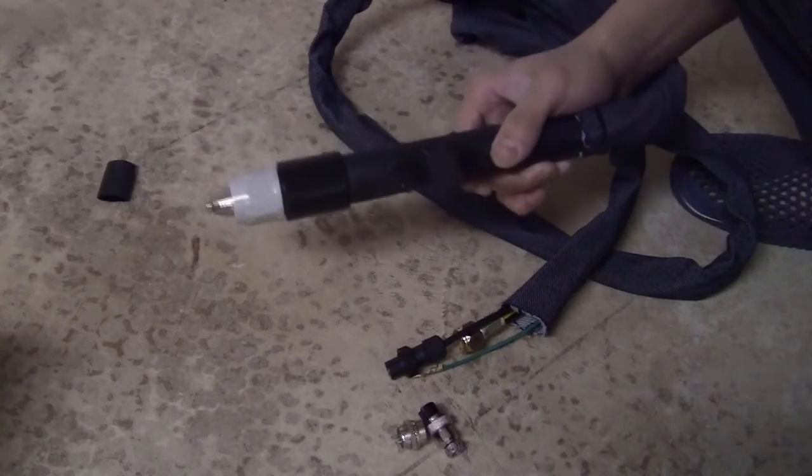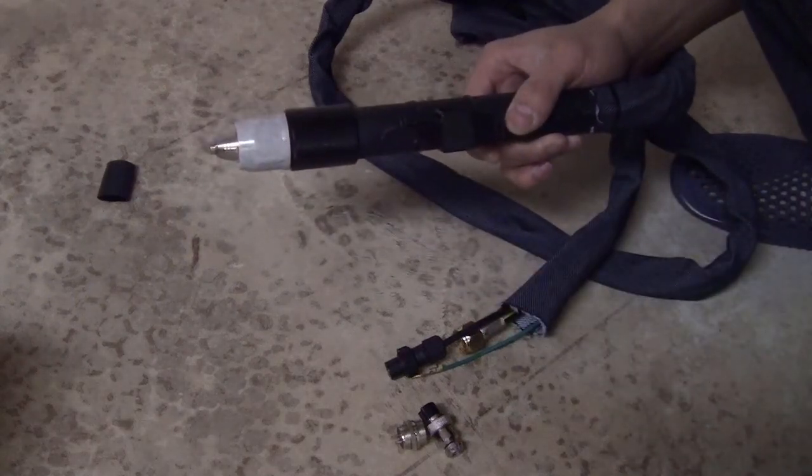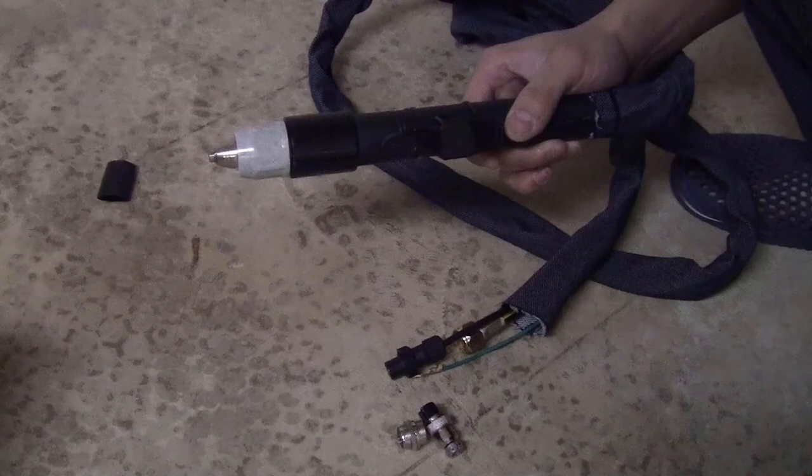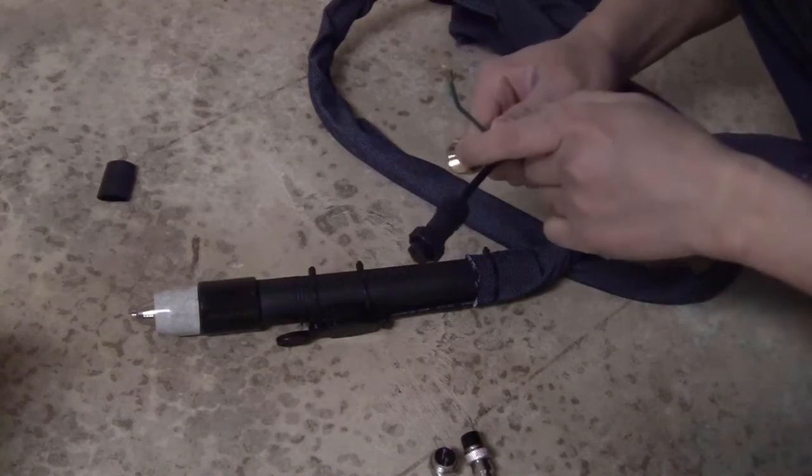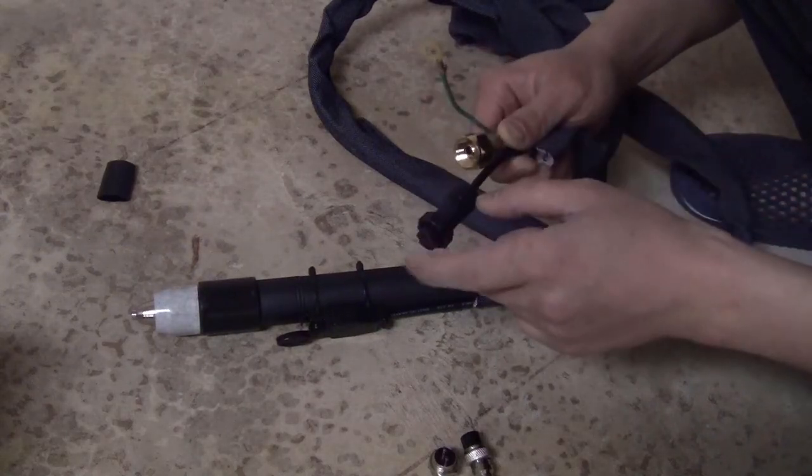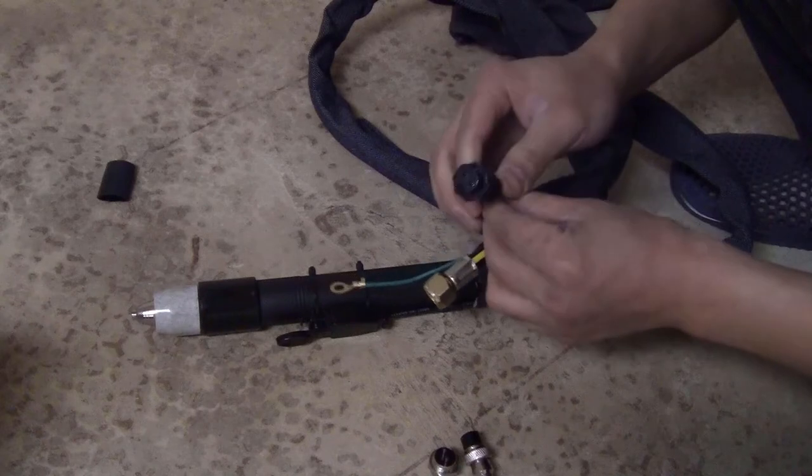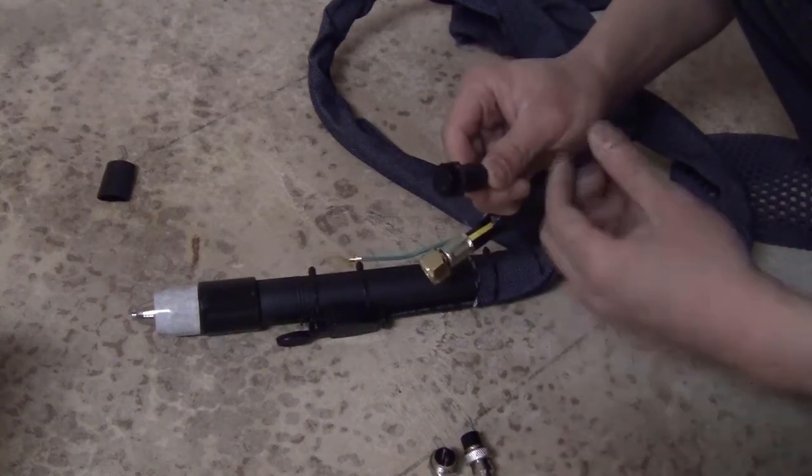For the torch, I got this one from eBay for $30. It is compatible with the plasma cutter Cut50 that I also bought from eBay. It has three connectors here: this one for compressed air, this one for pilot arc, and this one for the trigger. The one that you're interested in the most is the trigger one.